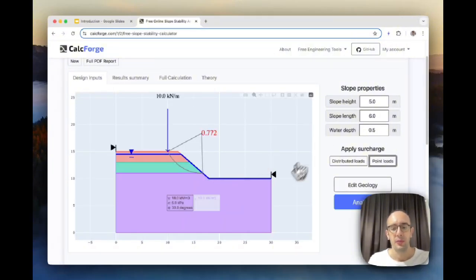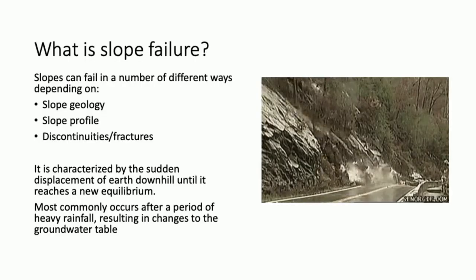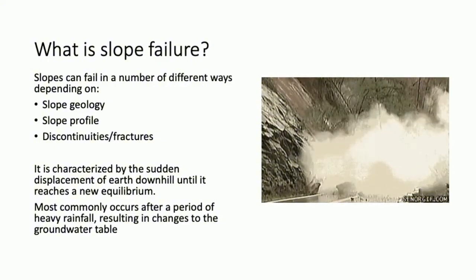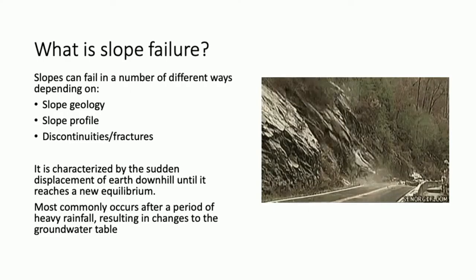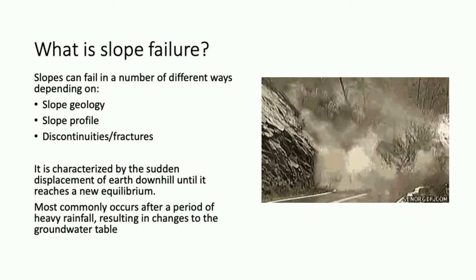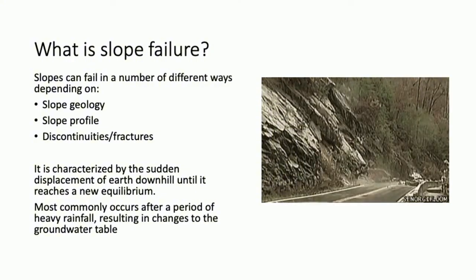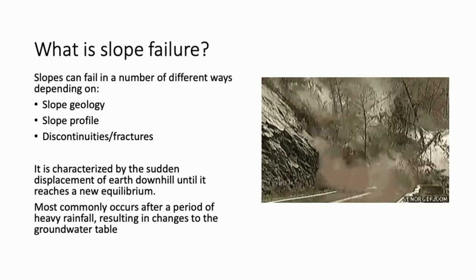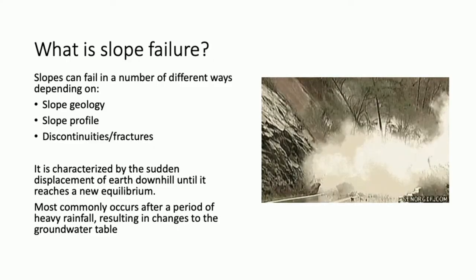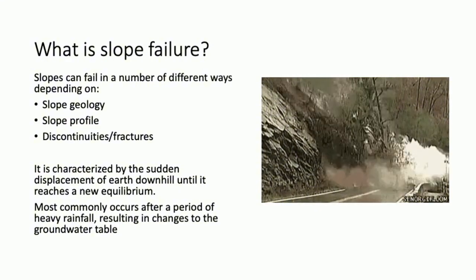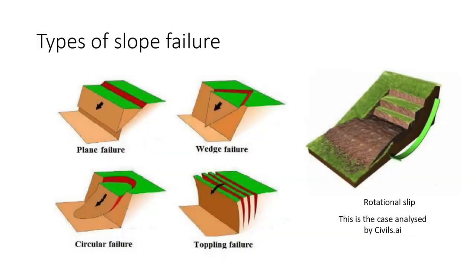So let's move on to the theory section now. What is slope stability? Slope failure, otherwise known as a landslide or rockfall, is a phenomenon where the ground in a non-equilibrium state is displaced under the action of gravity. The earth is displaced until it reaches a new equilibrium condition. Slopes can fail in a variety of different ways depending on the slope geology profile and if there are any fractures within the earth. However, when failure does occur it's sudden, typically without many warning signs. If a slope is susceptible, failure usually occurs after a period of heavy rain which results in changes to the groundwater table.